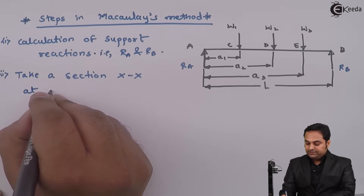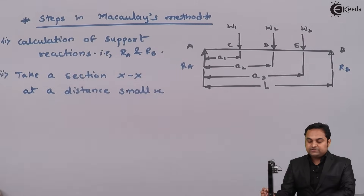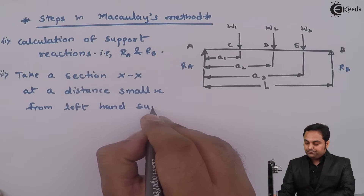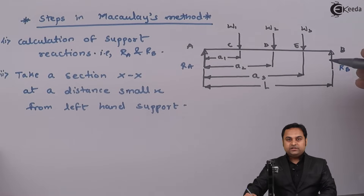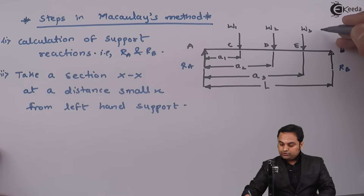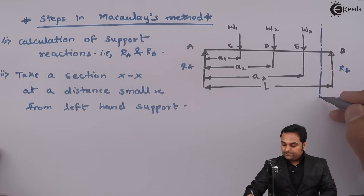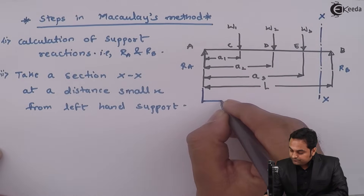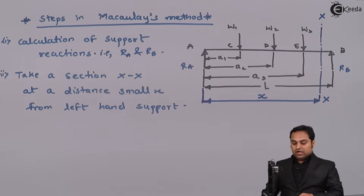Next, after getting the support reactions we will take a section X-X at a distance small x from the left hand support. The left hand support is point A, so from point A we consider the section X-X at extreme far away from the left portion — just before B — located at a distance small x.